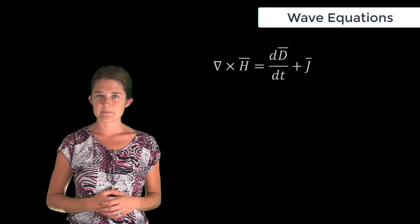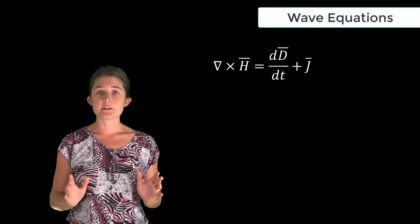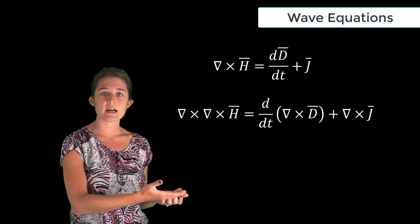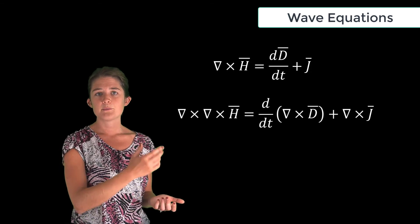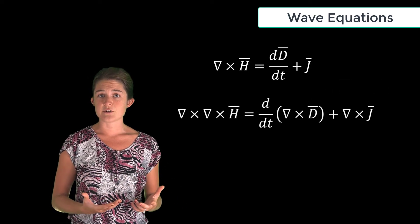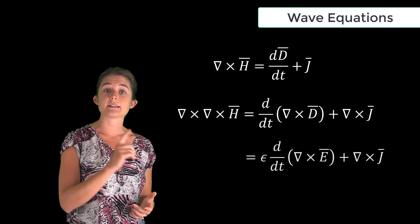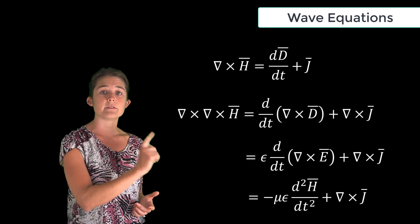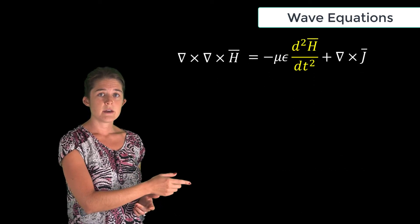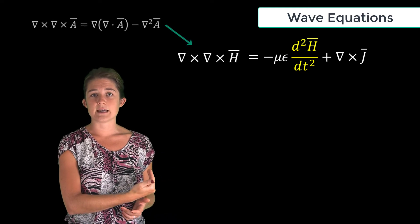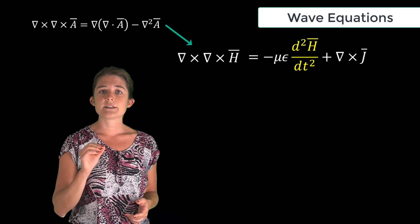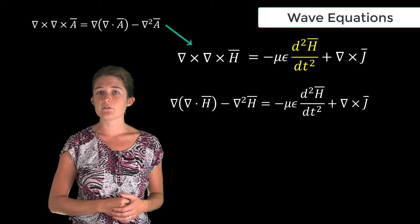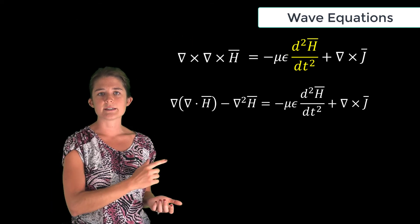Similarly, we can derive a wave equation for the magnetic field starting with Ampere's law. Again, the first step is to take the curl of both sides of the equation, which gives us del cross del cross H equal to the time derivative of del cross D plus del cross J. But D, by the constitutive relation, is equal to epsilon E, and del cross E by Faraday's law is equal to negative dB/dt, so now we have a double derivative in time on the right-hand side. We can apply the same vector identity as before to the left-hand side to get del of (del dot H) minus the vector Laplacian of H equals negative mu epsilon d²H/dt² plus del cross J.